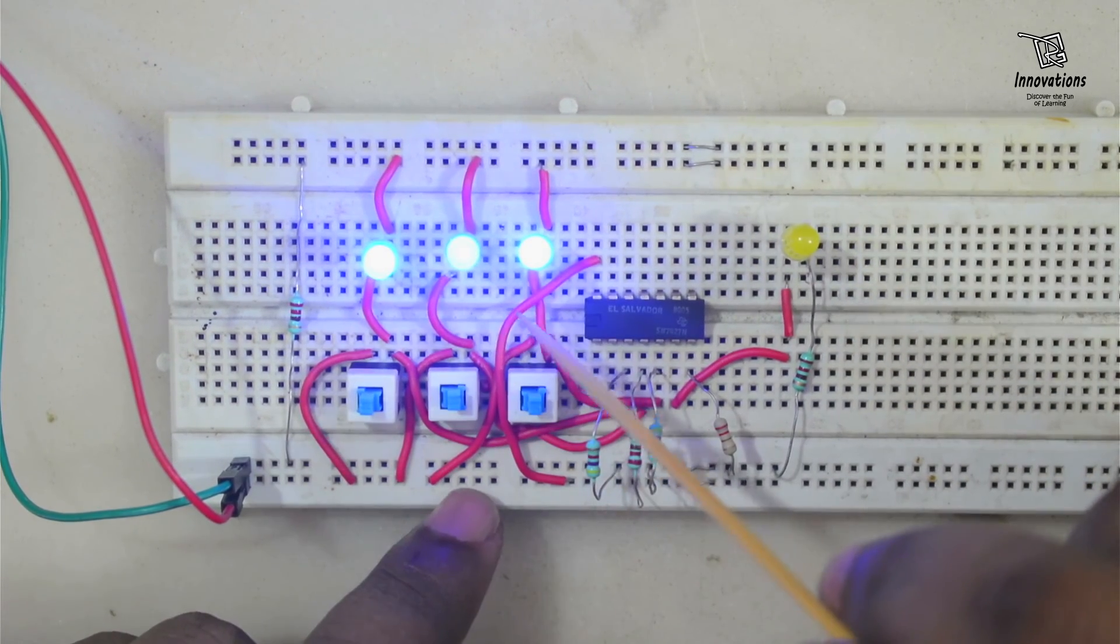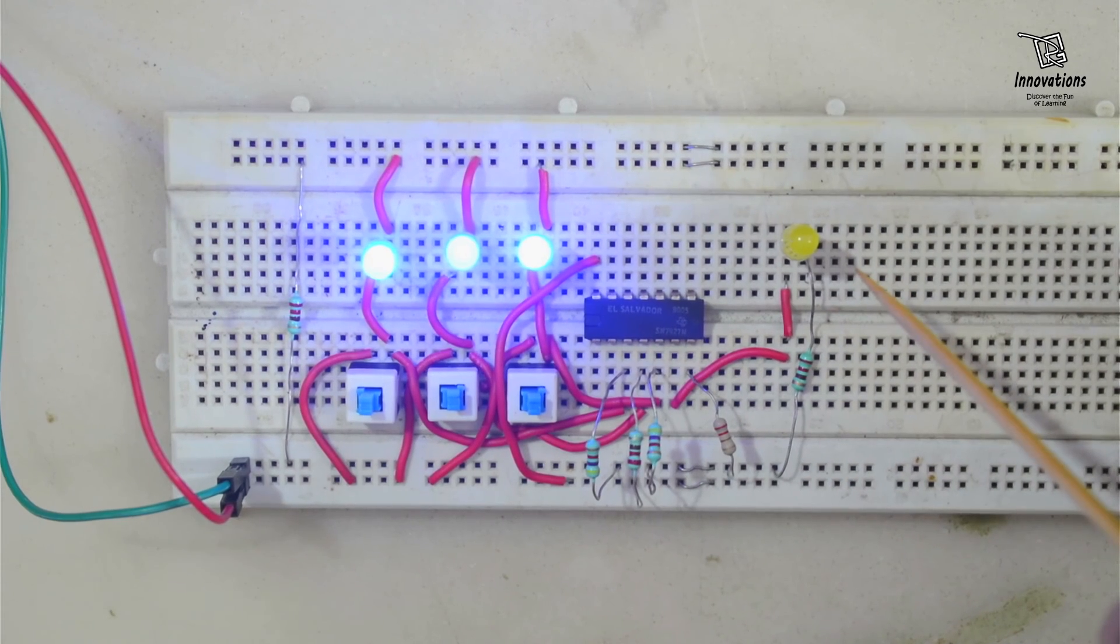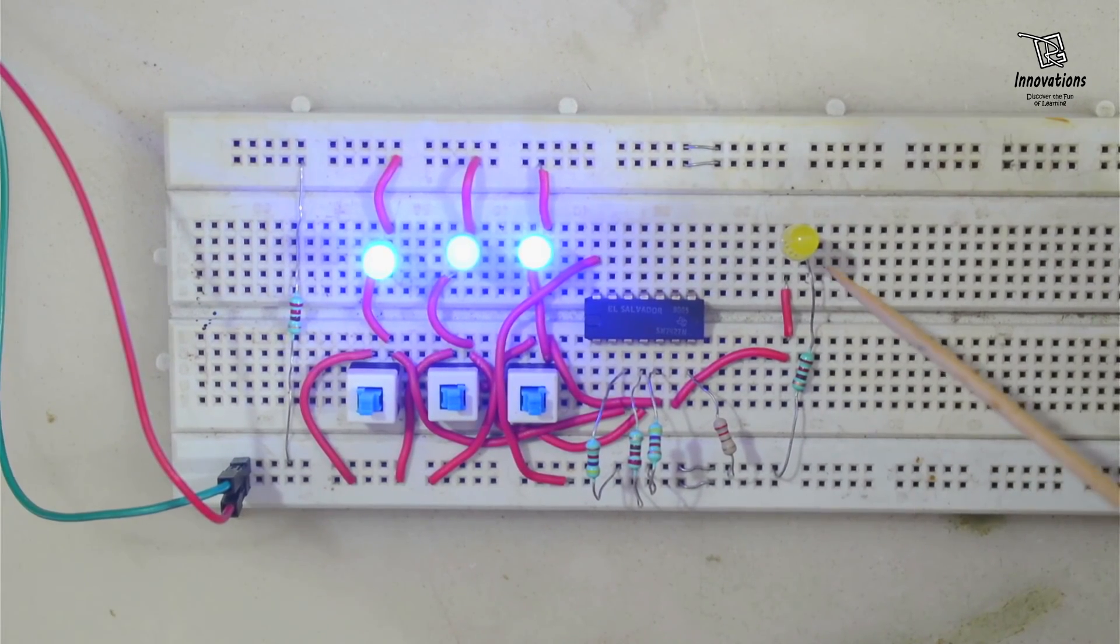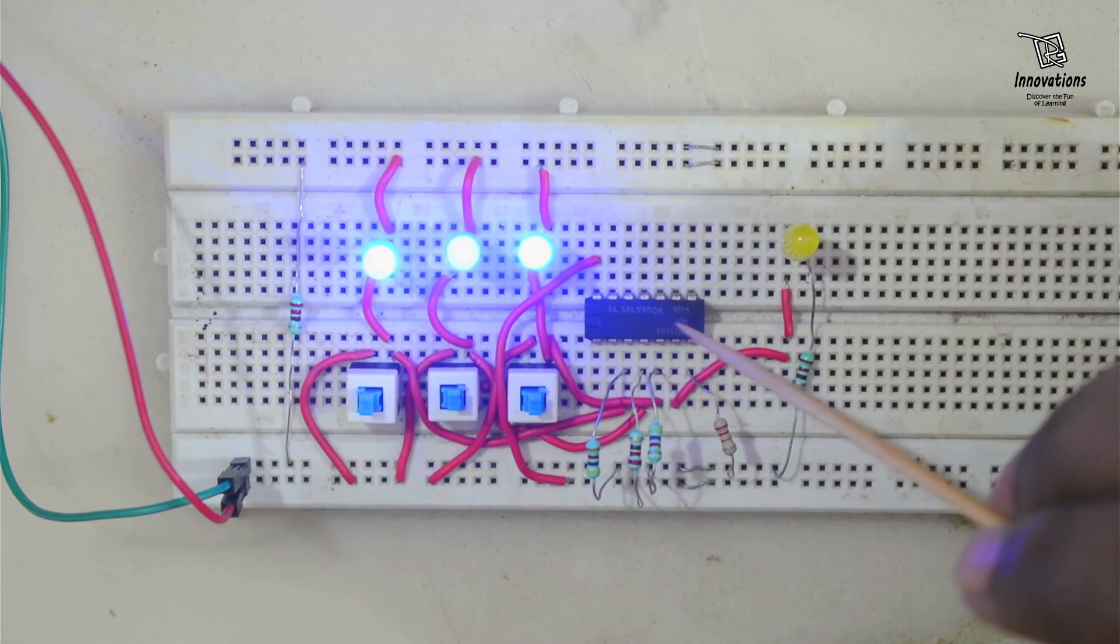So you see when any or all of the inputs are high the output is 0, and when all the inputs are 0 the output is high or 1. So this IC satisfies the truth table of a 3-input NOR gate.